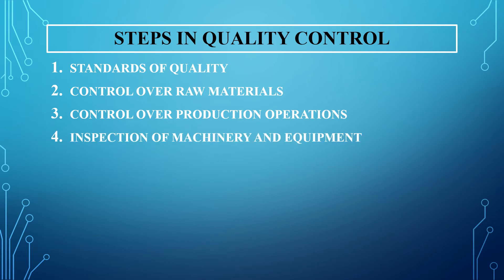The fourth step is inspection of machinery and equipment. Once you put the raw materials into production, it is important that the machinery and equipment are properly maintained. The type and condition of machinery, equipment and tools must be maintained properly because these play a very important role in maintaining the quality of the product. If equipment and machines are worn out, not properly maintained, or outdated, it affects the quality of production. Therefore, periodical inspection should be undertaken to ensure all machines are functioning properly so that production quality is not affected.